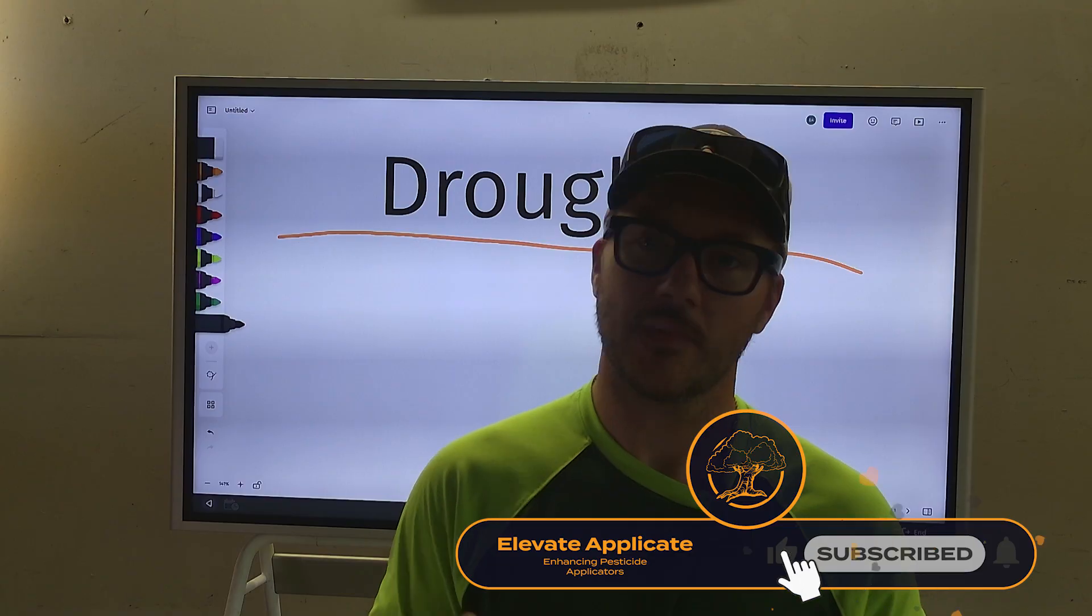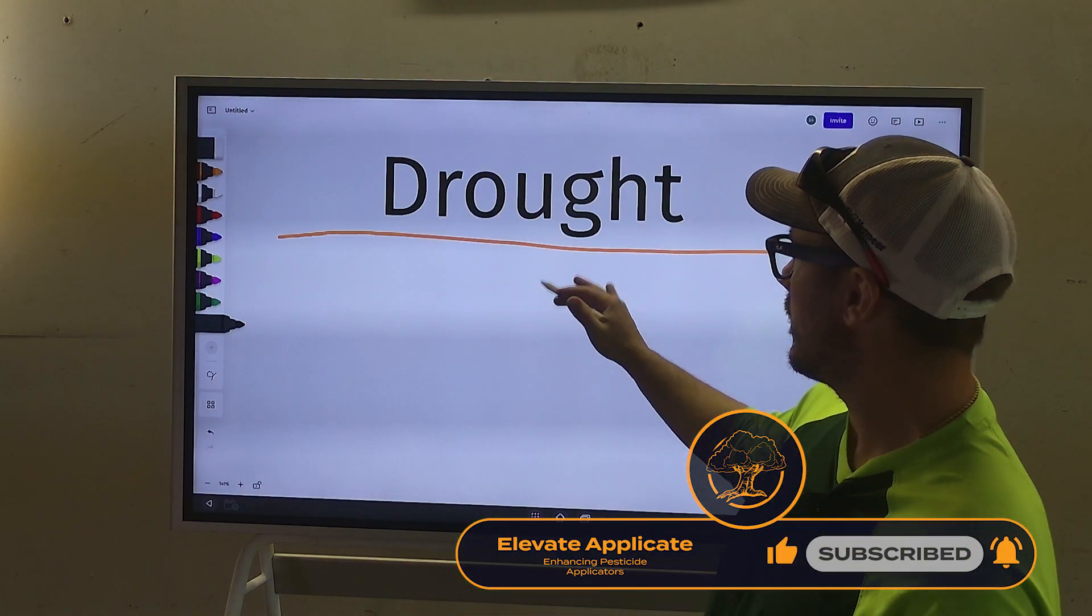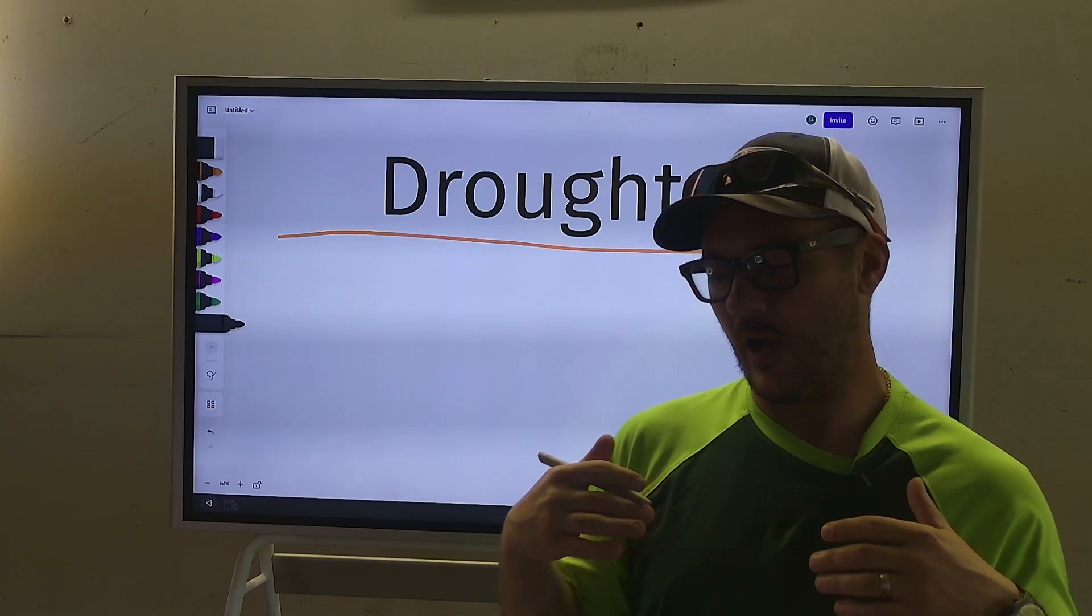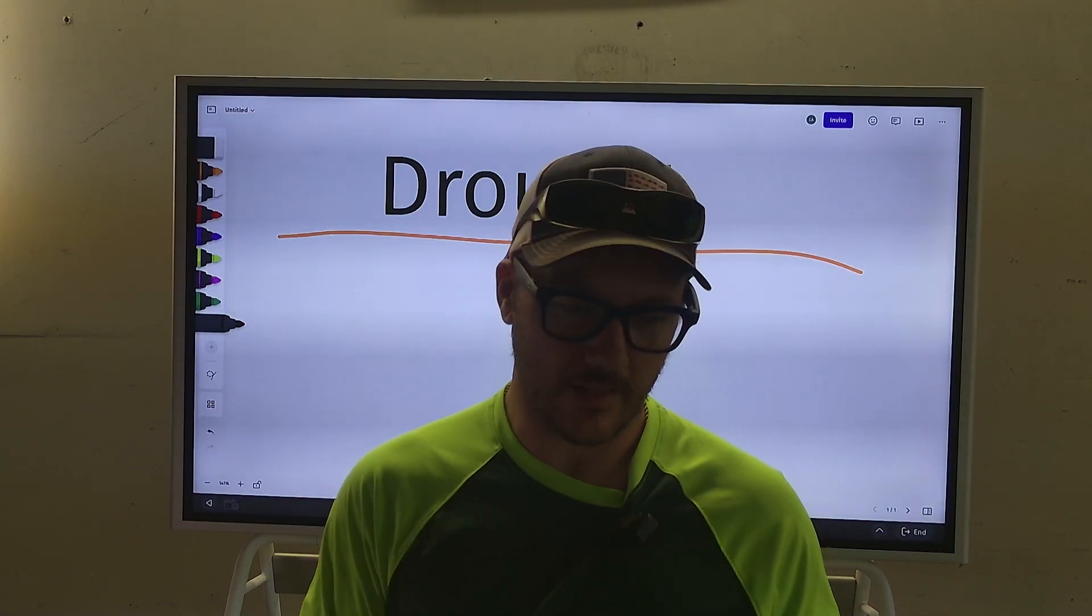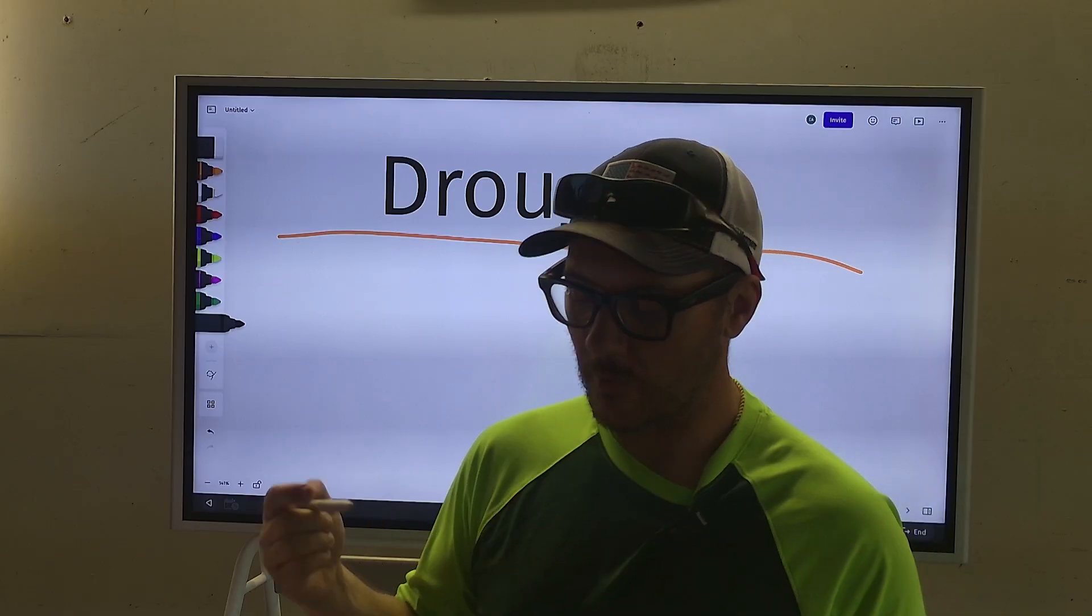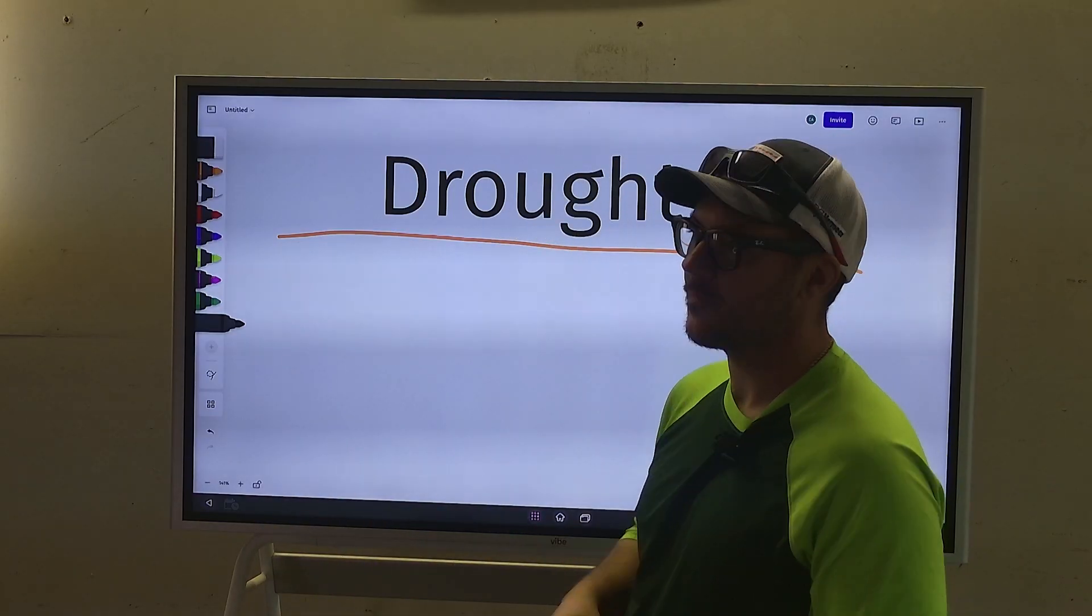Today what we're going to talk about is drought and how drought affects pesticides, how they function, how it works with plants, insects, fungal diseases, etc. And the reason why I'm bringing up this topic is because here in Michigan we've gone roughly 19 days without rain in my particular region.